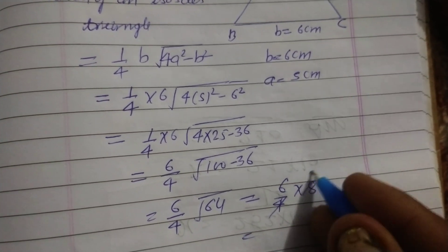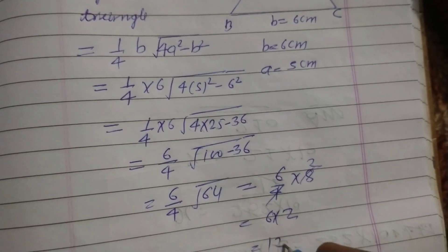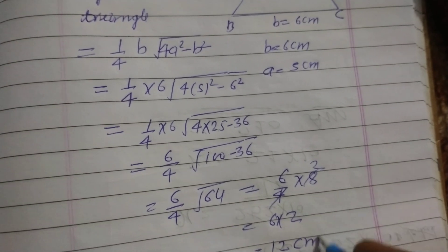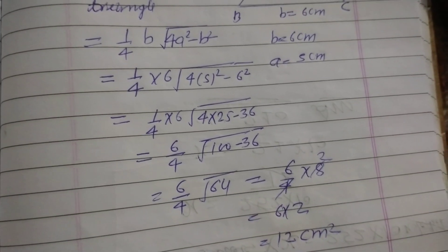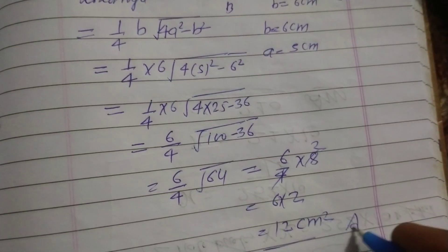So 6/4 times 8 equals 12. So 12 cm² is the area of isosceles triangle ABC. So this is the answer.